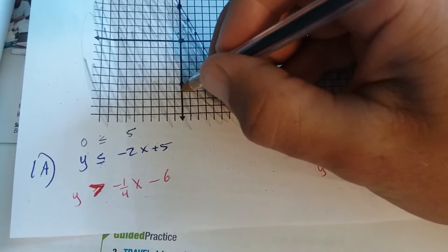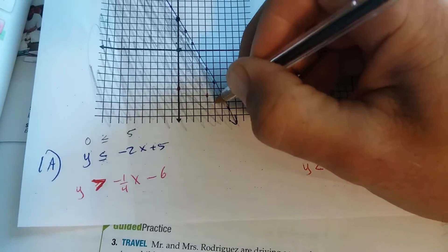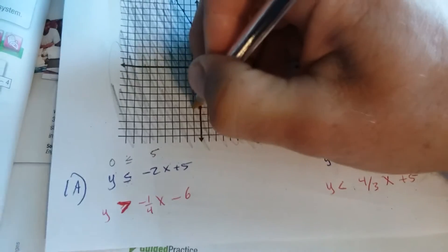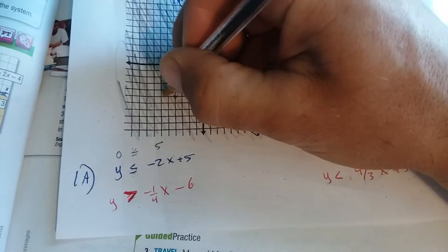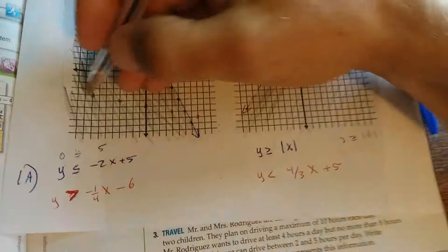And then your slope's negative 1/4. Down 1 over 1, 2, 3, 4. Down 1 over 1, 2, 3, 4. Down 1 over 1, 2, 3, 4. Down 1, 2, 3, 4. Since you don't have the equal bar, this is going to be a dashed line here.